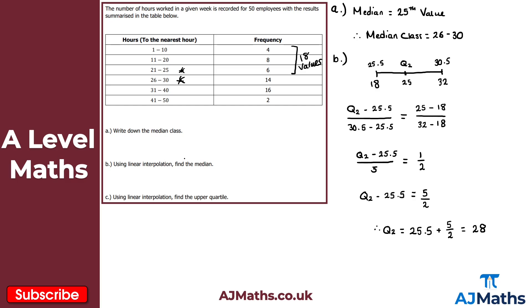Now we repeat this process to find the upper quartile for part C. We need to identify where Q3 lies. Q3 equals 50 × 3 / 4 = 150 / 4 = 37.5, so we need the 37.5th value.